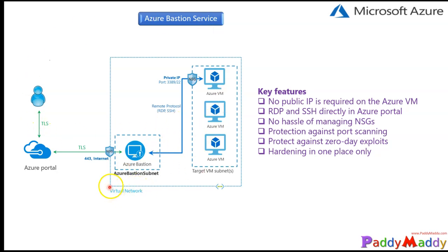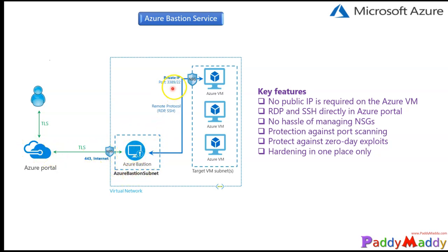You can use Azure Bastion inside your virtual network. Inside your VNet, you would actually create a dedicated subnet for the Azure Bastion subnet. Since it's a PaaS service, you connect directly from the Azure portal to the Azure Bastion service over port 443, and from there you can connect to your virtual machines — whether Linux or Windows — all within a single portal, without needing to download an RDP file.